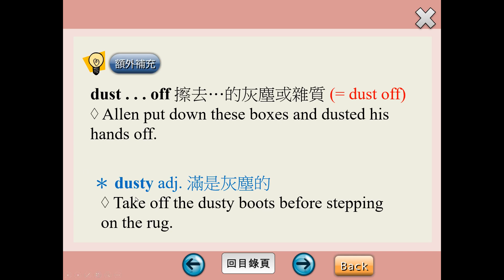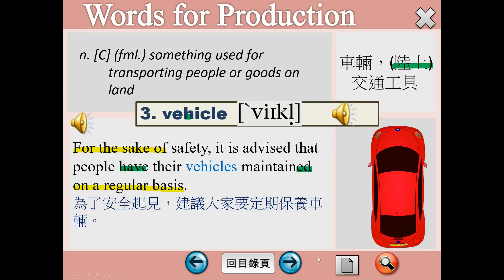Dust除了除塵之外，也有撒上粉末的意思，比方說在latte上面撒上肉桂粉，或者在蛋糕上做裝飾時撒上粉狀物，也可以用dust這個動詞。Dust off呢，就是指拍去某樣物體上面的灰塵或雜質。Allen put down these boxes and dusted his hands off，Allen把這些盒子放下來，並且拍拍手把手上的灰塵拍掉。形容詞字尾加y，dusty，指的就是充滿灰塵的。